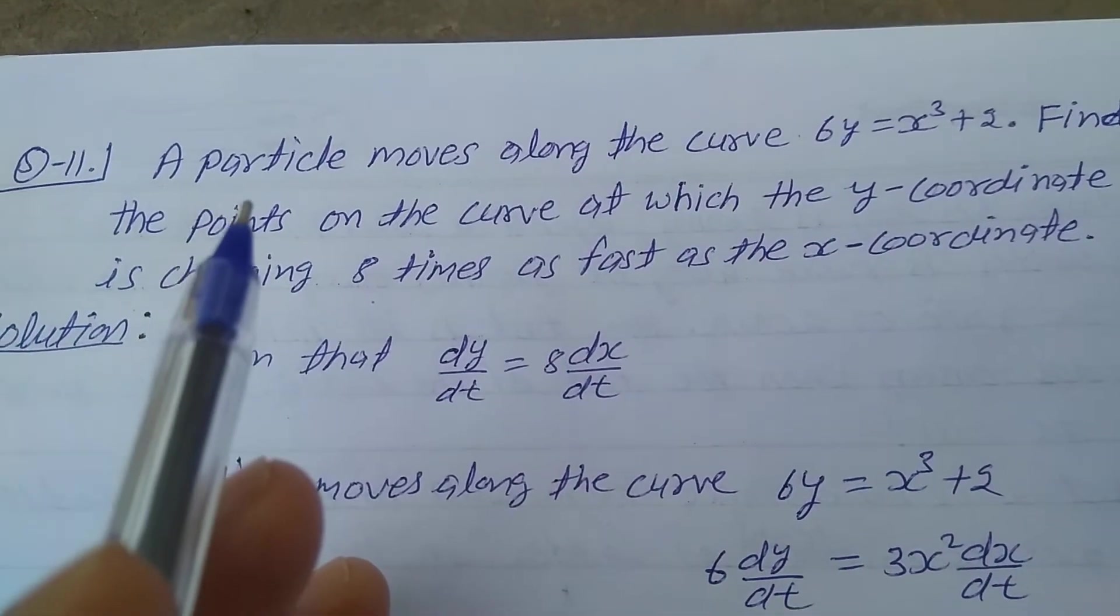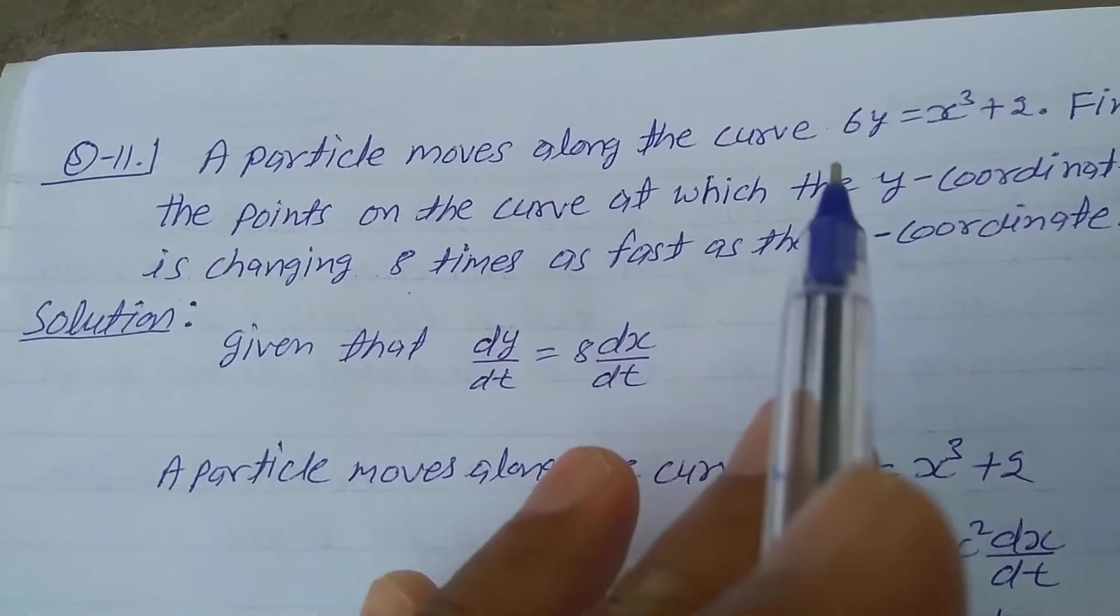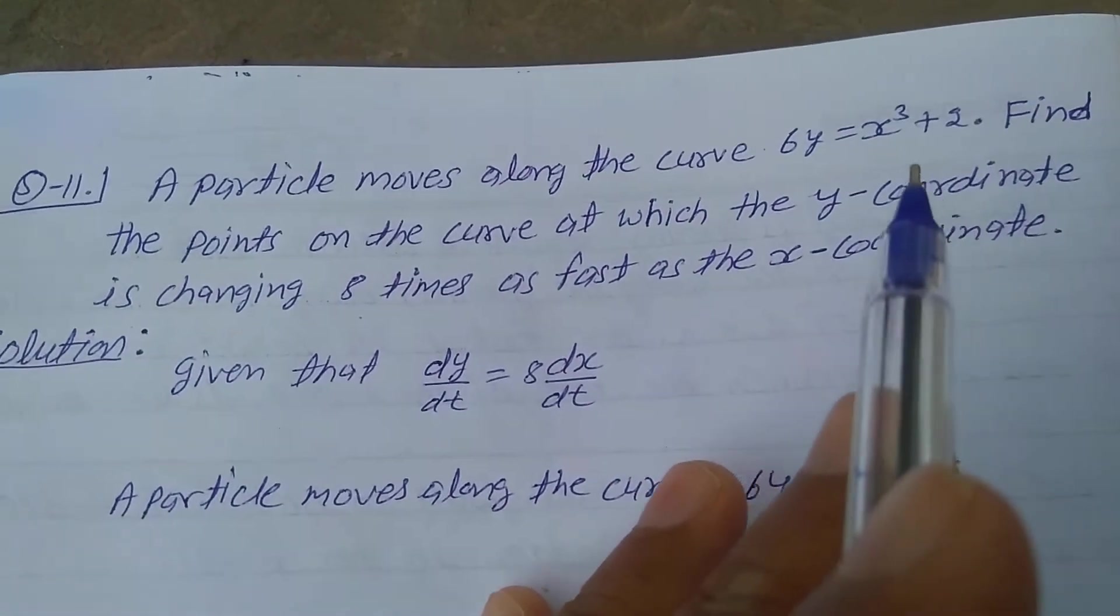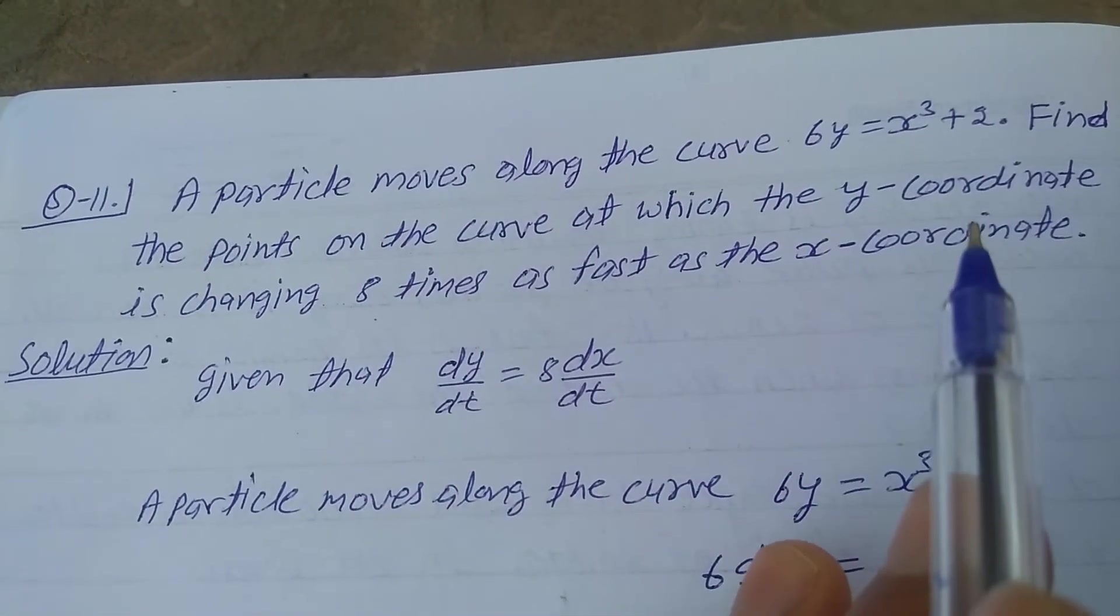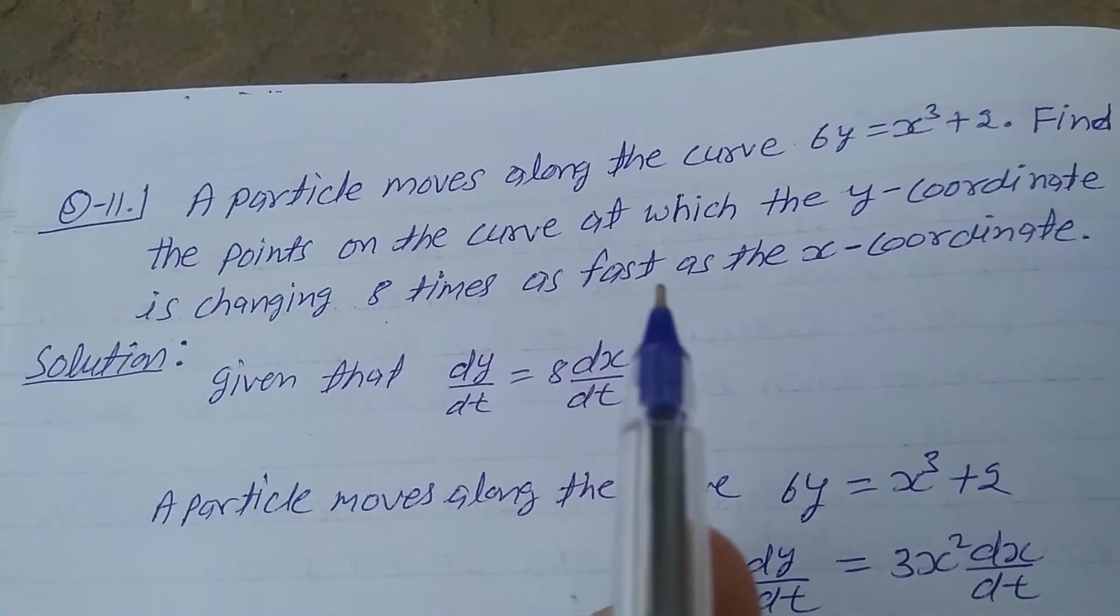Explain question number 11, exercise 6.1, class 12th. A particle moves along the curve 6y equals x cubed plus 2. Find the points on the curve at which the y-coordinate is changing 8 times as fast as the x-coordinate.